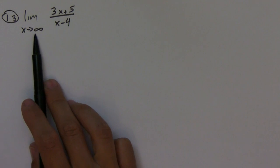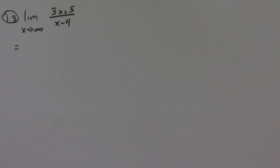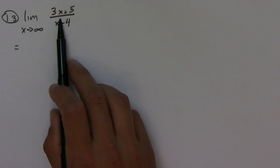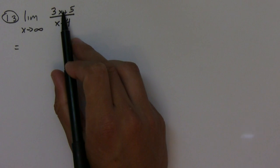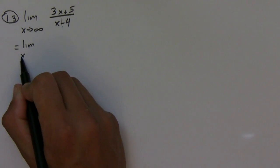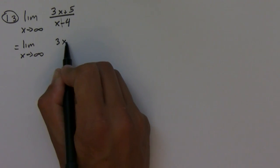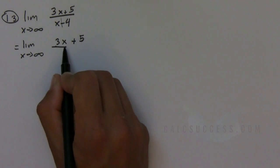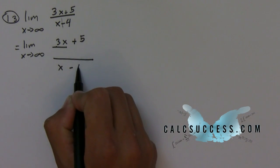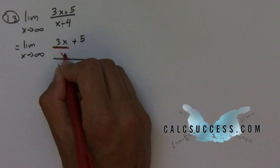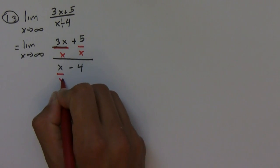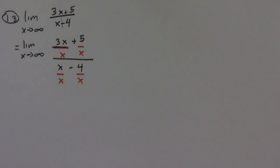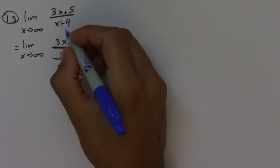Here we have a limit as x goes to infinity. The usual trick is to look at all of the terms and figure out what the highest power is. Here the highest power is 1, so we're going to divide the numerator and the denominator by x to the highest power. I'm going to rewrite everything and divide everything by x.